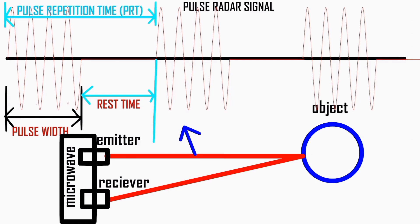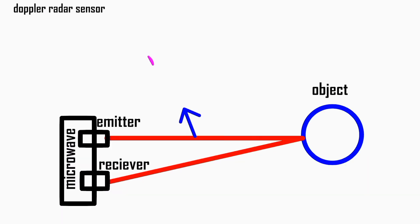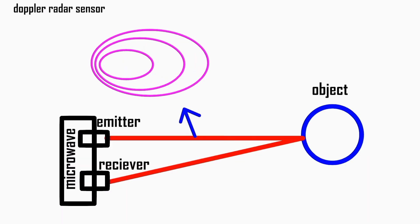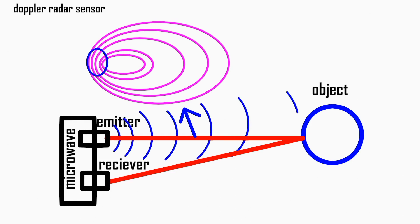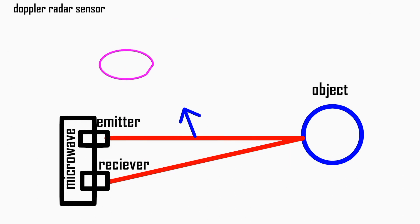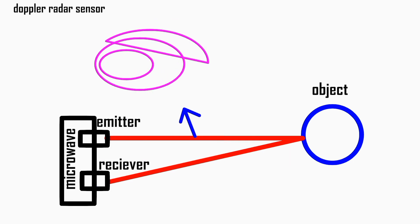Doppler radar sensors focus on detecting the frequency shift of the reflected signal caused by movement of objects. They are often used in speed enforcement systems, weather monitoring, and sports applications.